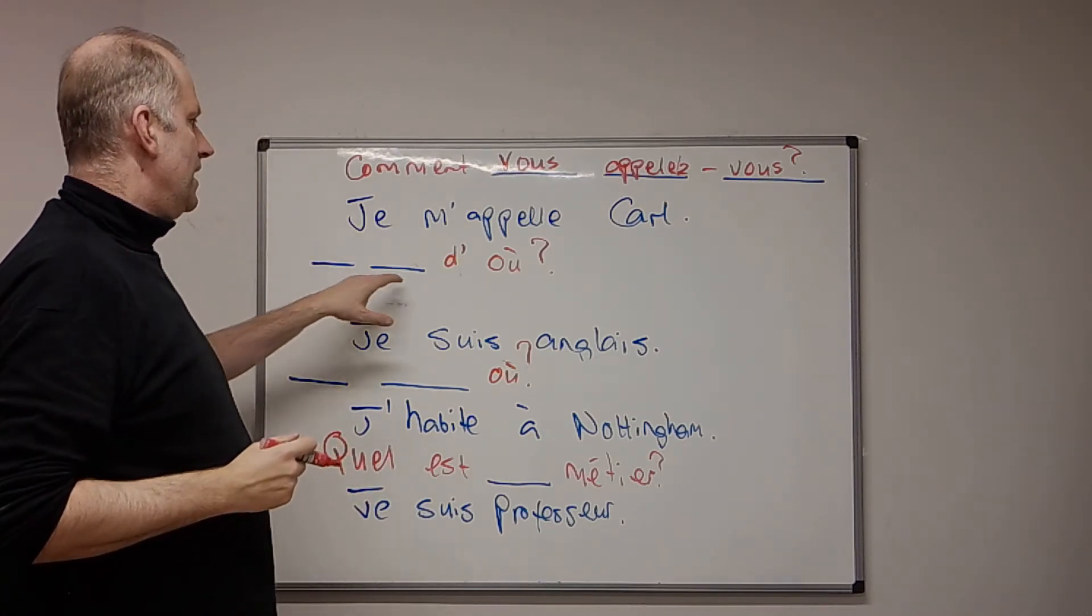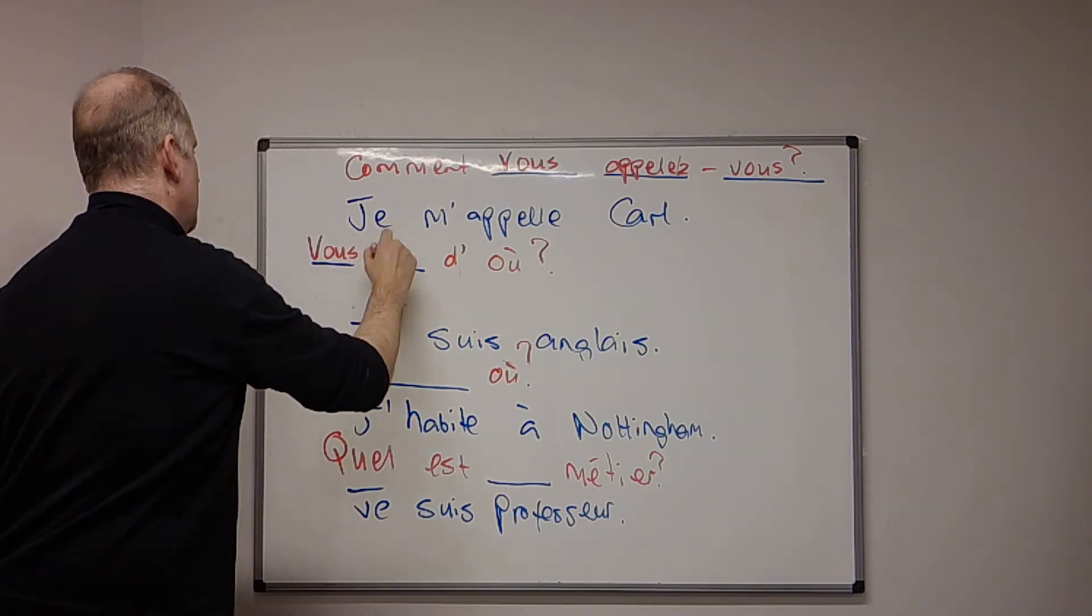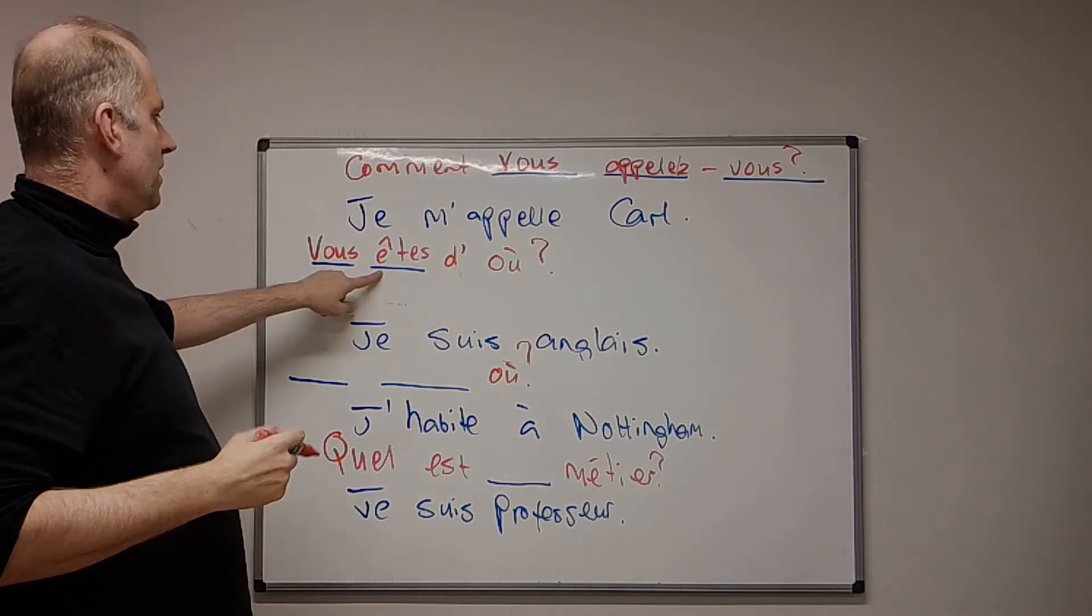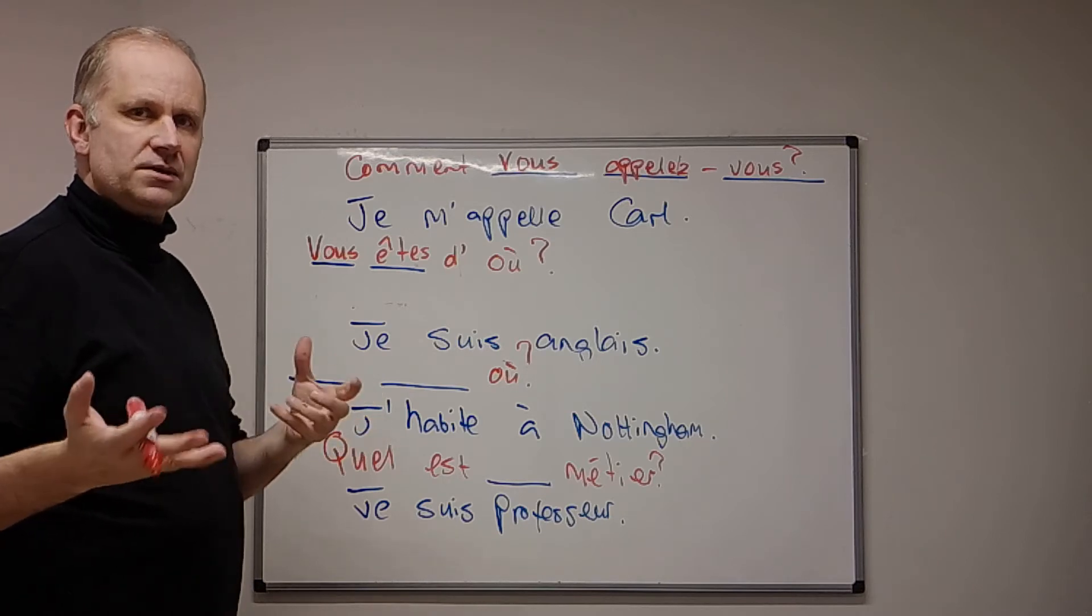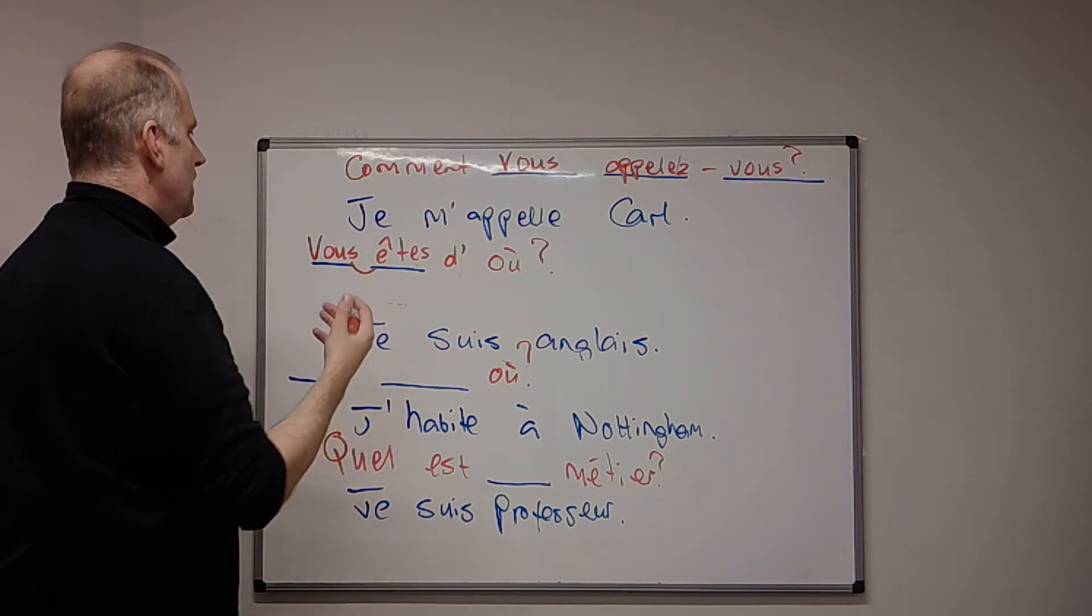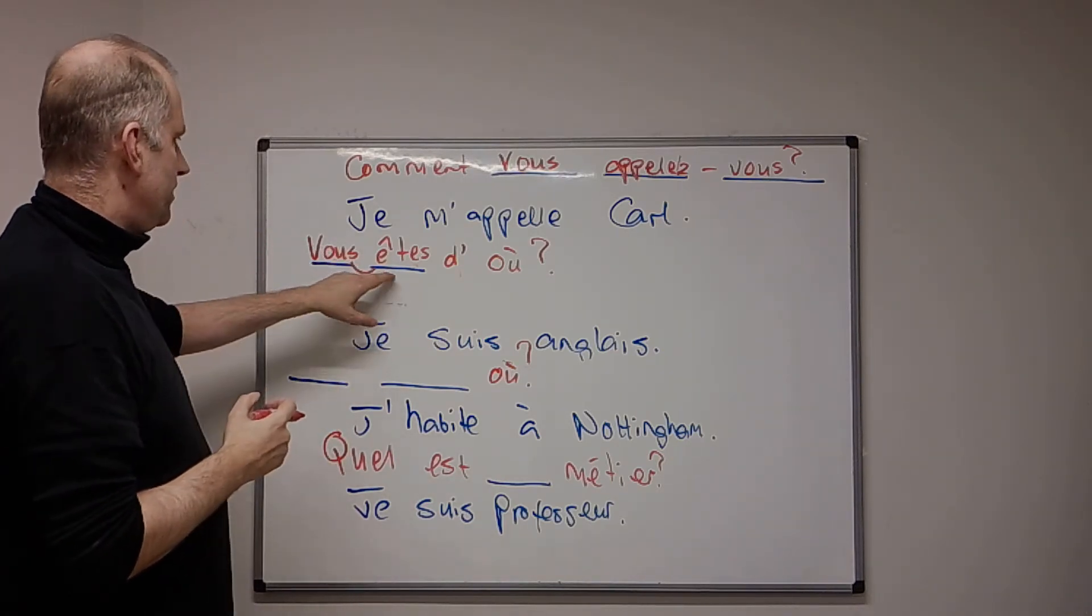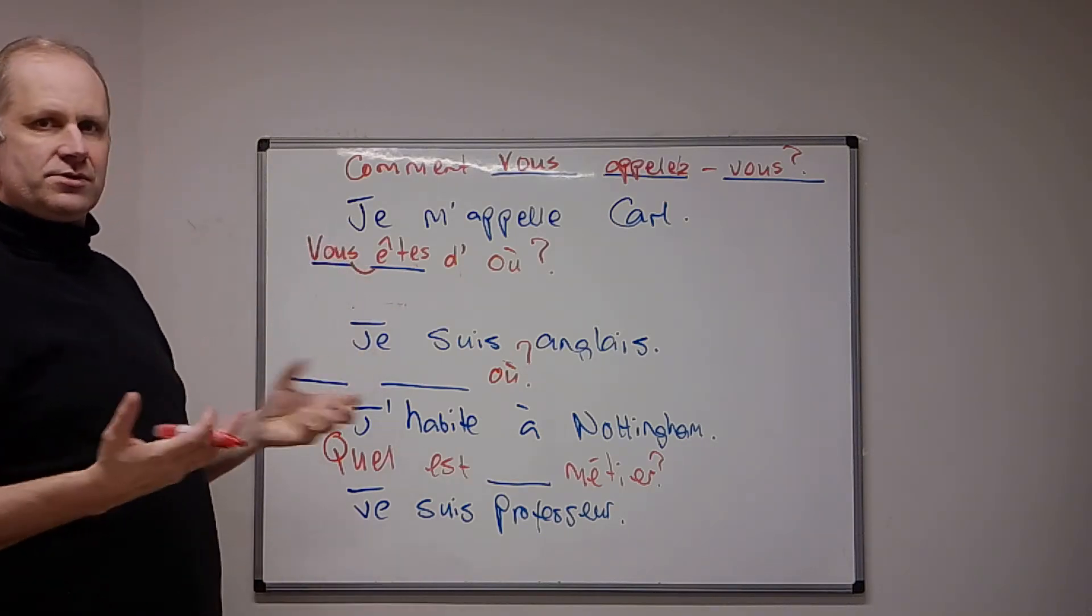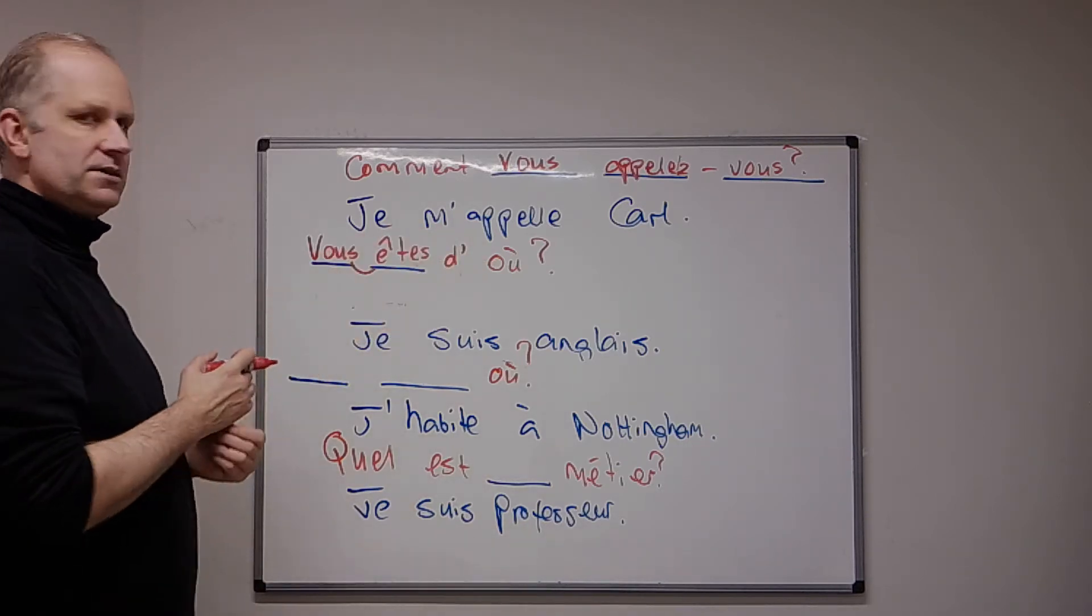Now, for the vous form, it is vous êtes. So, when you have vous, followed by a verb which begins with a vowel, or often h as well, some verbs beginning with h, not all, then you get liaisons. So vous, you don't normally hear the s, but when the next verb, in this case, begins with an e, you get vous êtes. So it becomes like, the s almost sort of transforms into a z sound, and gets pushed over into the next word.